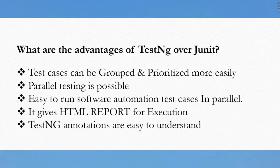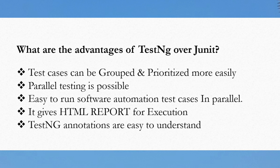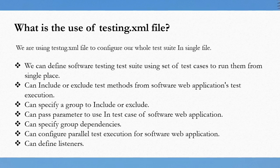The next question is: what are the advantages of TestNG over JUnit? There are a number of advantages. First, test cases can be grouped and prioritized more easily. TestNG annotations are easy to understand. Parallel testing is possible — it is easy to run automation test cases in parallel. And TestNG produces an HTML report for execution results. These are the main advantages of TestNG over JUnit.